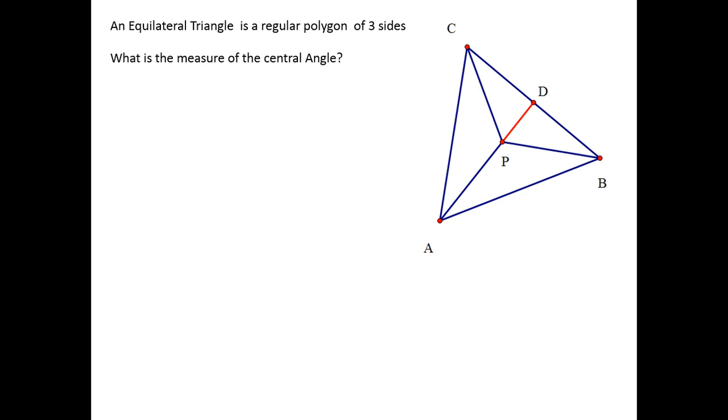What is the measure of the central angle? Don't forget what the central angle is. CPA, CPB, APB, their central angle is 360 divided by the number of sides. That's 120. So, the central angle is 120.